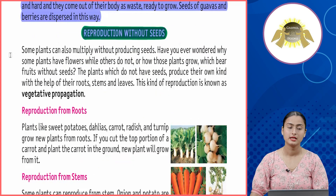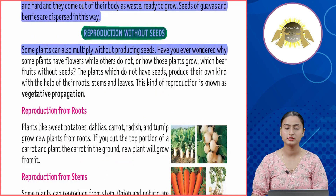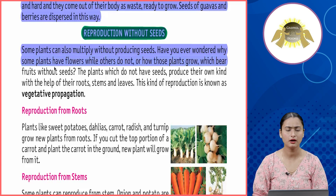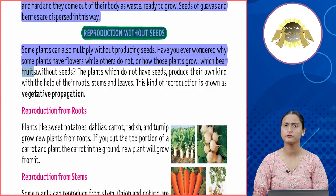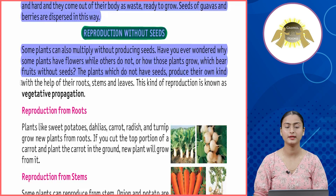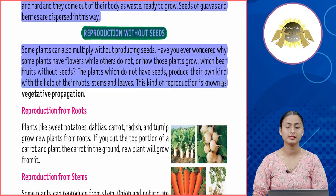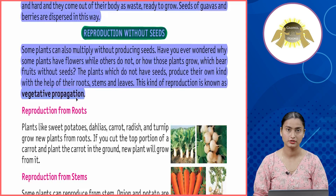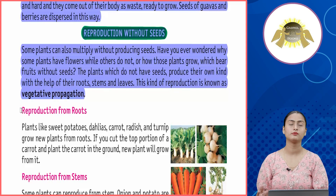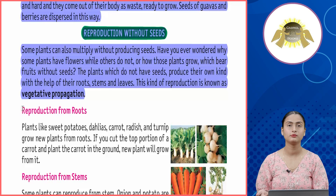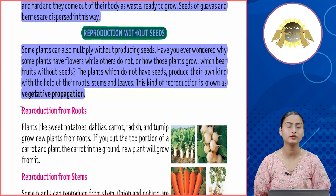Reproduction without seeds: some plants can also multiply without producing seeds. Plants which do not have seeds produce their own kind with the help of their roots, stems, and leaves. This kind of reproduction is known as vegetative propagation. Some plants and fruits do not have seeds, so they germinate through roots, leaves, or stems.